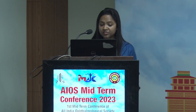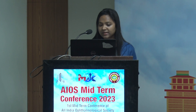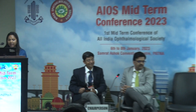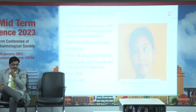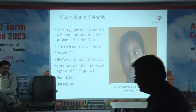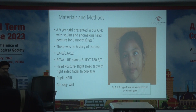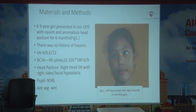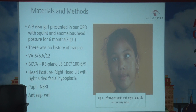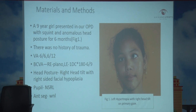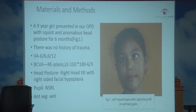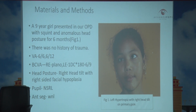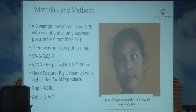Our case is a nine-year-old girl who presented in our OPD with squint and anomalous head posture for six months. There was no history of trauma. Visual acuity was 6/6 and 6/12. BCVA: her right eye was plano and left eye with one diopter cylinder at 180 degrees, improving to 6/9. Her head posture showed right head tilt with right-sided facial hypoplasia. Pupils were NSRL and anterior segment findings were within normal limits.